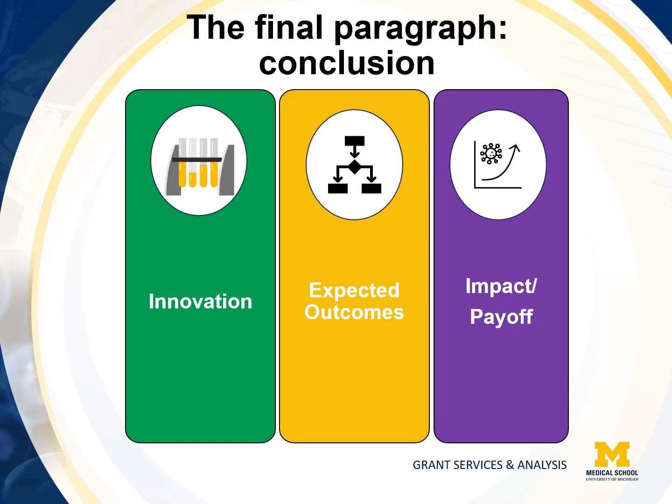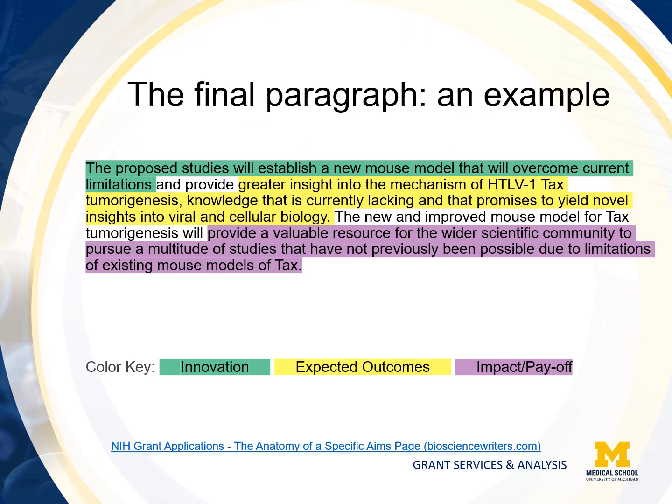The final paragraph is your conclusion. Here you should inform reviewers of the payoff — what they can expect for a return if your application were to be funded. In one to three sentences, state the innovation: what would completion of this proposal bring to the field that is not present currently? Your expected outcomes — what do you expect to see at the completion of each aim? The impact — how will your proposal benefit the people or other subjects you mentioned in the opening paragraph? An example of the final paragraph shows the innovation, expected outcomes, and the payoff listed.